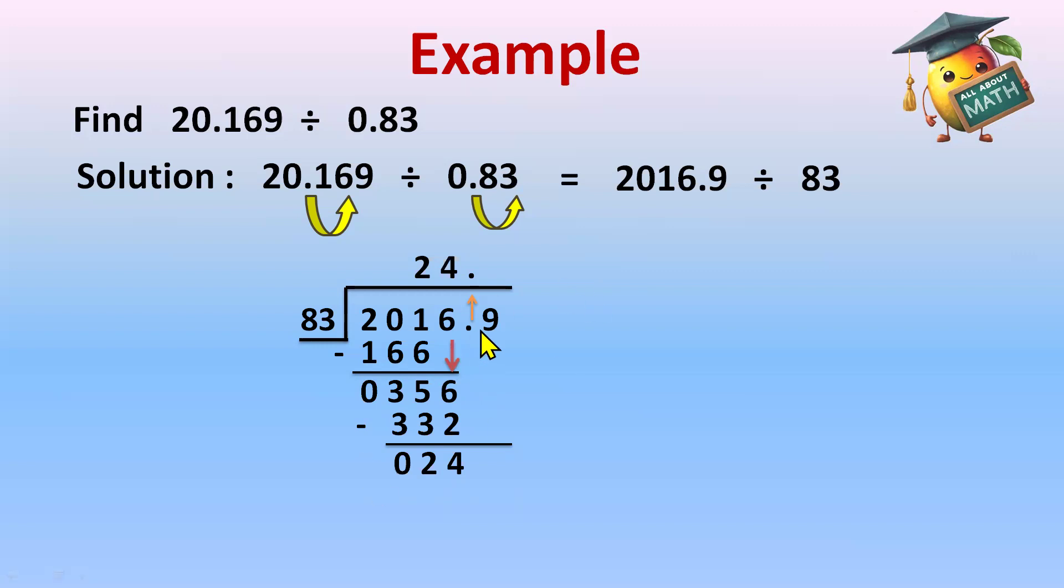We have 24 here, and now this 9 will come down. This becomes 249. Now we will do the subtraction. 9 minus 9 is 0, 4 minus 4 is 0, 2 minus 2 is 0, and we have our answer because now we have the remainder 0.